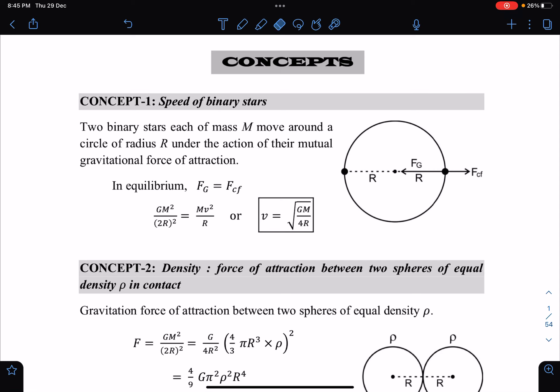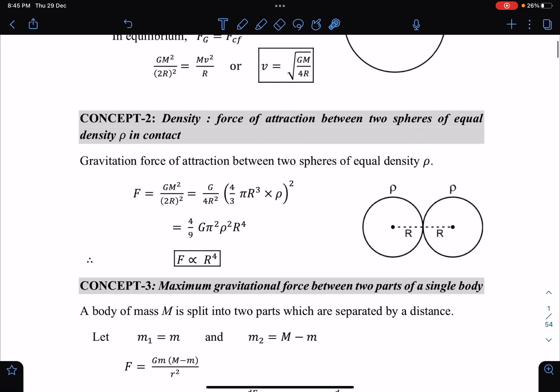As you can see here, the speed of binary star is one concept where two masses are moving under the effect of mutual gravitation. Force of attraction between two spheres of equal density in contact uses shell theorem, and this force is proportional to r to the power 4. Based on this, they might ask you some questions.